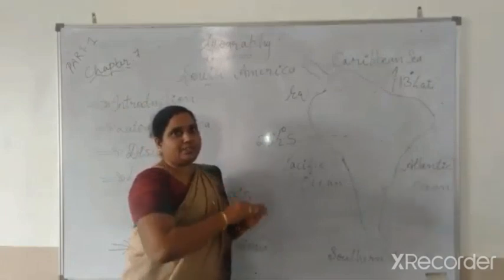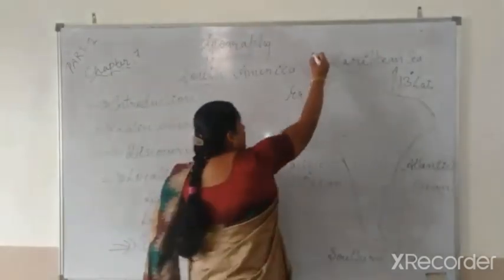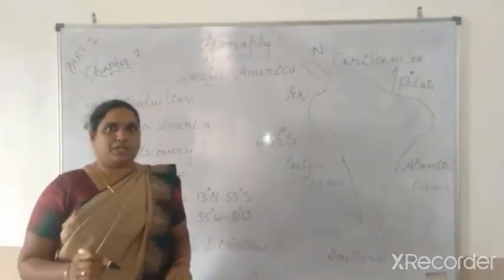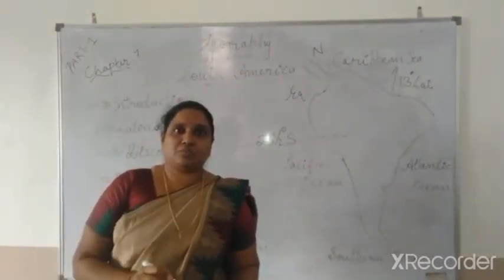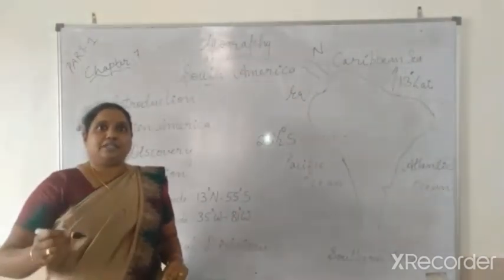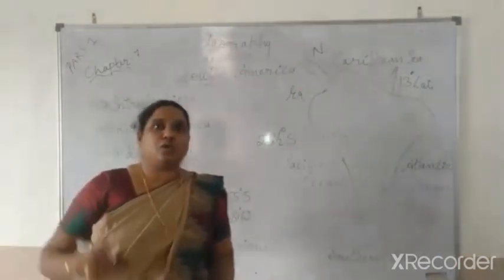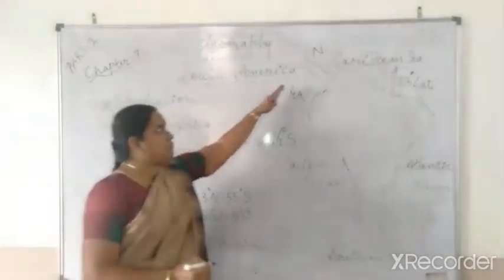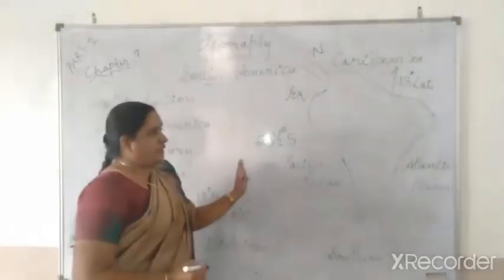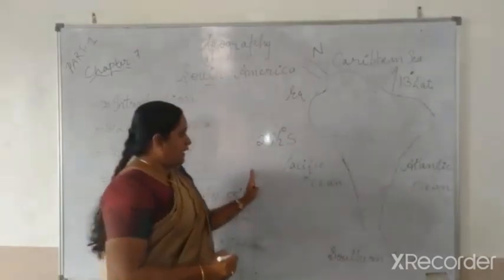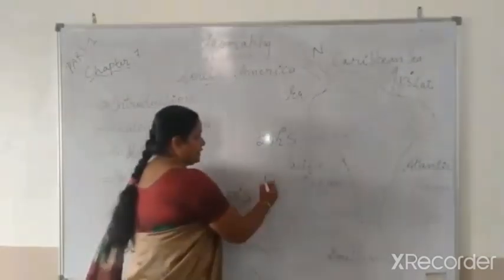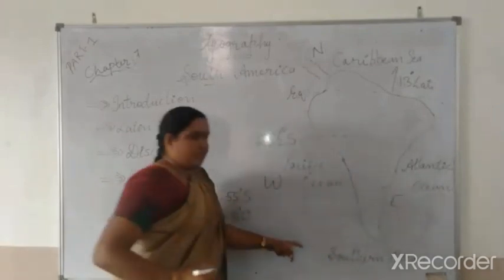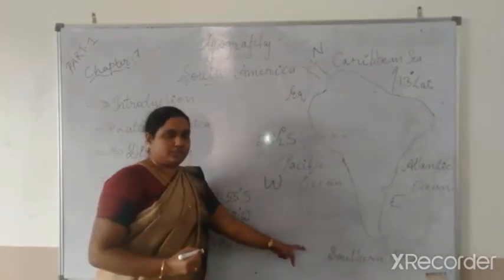The Caribbean Sea is in the north of South America — when we studied North America, I mentioned the Caribbean Sea is in its south. In the west is the Pacific Ocean, in the east is the Atlantic Ocean, and in the south is the Southern Ocean.